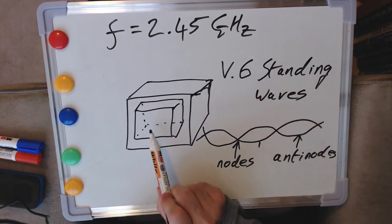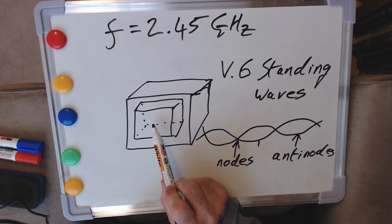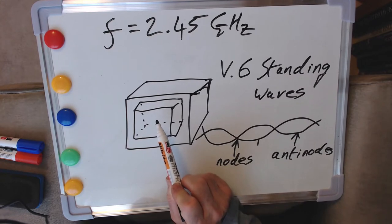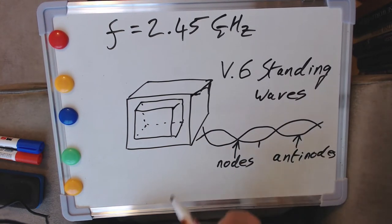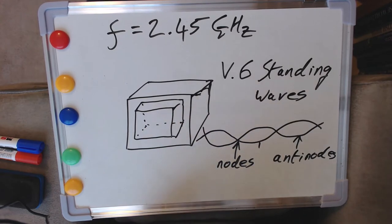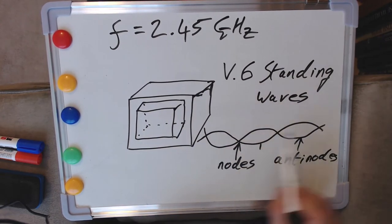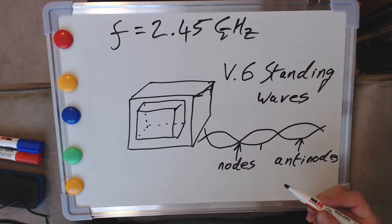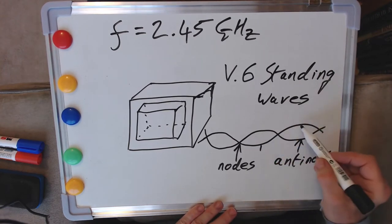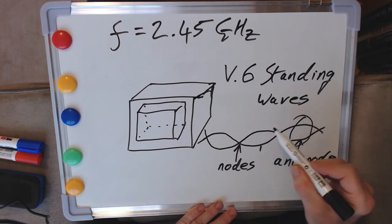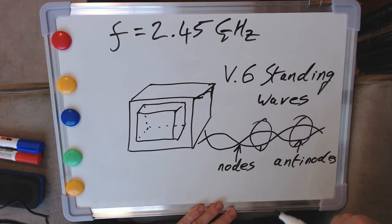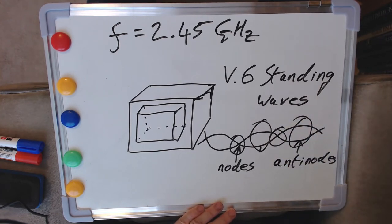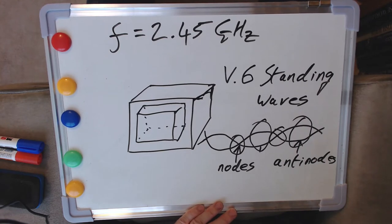So we had within here these points called nodes where we seem to have no wave motion happening at all, it's just stationary, but then the opposite of that here and here for instance, these are called antinodes, and that's where all the action is or appears to be. Now these get set up in three dimensions inside our little box here. We get standing waves at microwave frequencies so we get a whole set of nodes and a whole set of anti-nodes inside our box and they're in three dimensions now, not just this linear arrangement I've sketched out here.